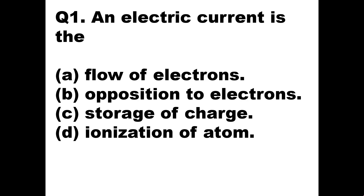Whenever a material has excess free electrons that have come out of the bonding, those electrons flow. The material which has many free electrons is called a conductor. Medium free electrons — semiconductors. Less or no free electrons — insulators. So the right answer is Option A: flow of electrons.